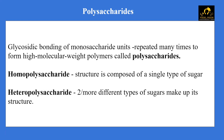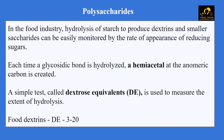Starch and glycogen are the major storage forms of carbohydrates in plants and animal tissues. An important property to understand is the reducing capacity of these carbohydrates, as it helps us determine how digestive enzymes work when hydrolyzing dietary starch. In the food industry, hydrolysis of starch to produce dextrins and smaller saccharides can be monitored by the rate of appearance of reducing sugars. Whenever a glycosidic bond is hydrolyzed, there is a formation of a hemiacetal.